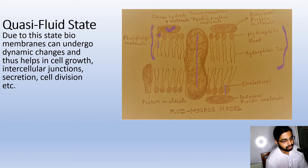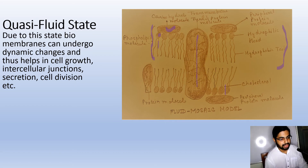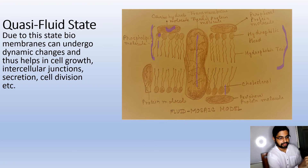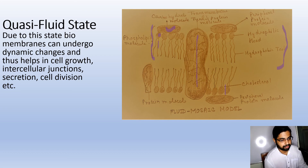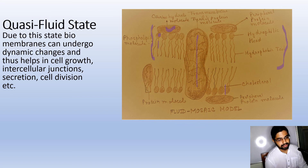The quasi-fluid state of biomembranes allows them to undergo dynamic changes, which helps in cell growth, intercellular junction formation, secretion, and cell division. This quasi-fluid nature of the biomembrane is key to these cellular processes.